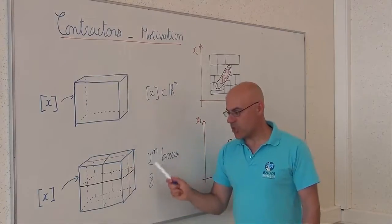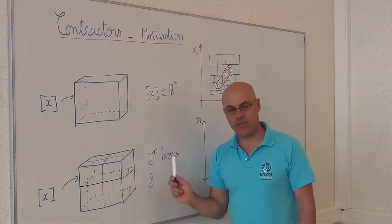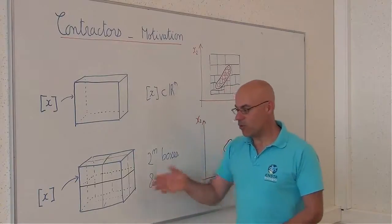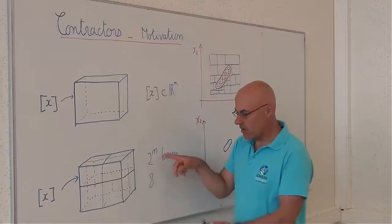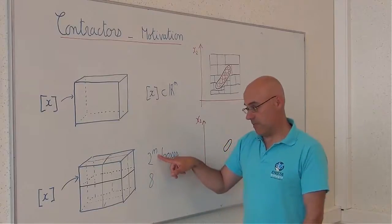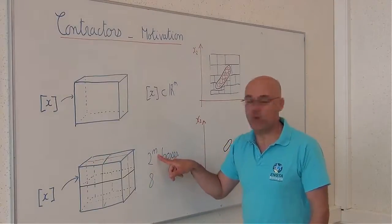Because of the exponential number of sub-boxes that are generated, we will not be able to bisect boxes for n big, such as n equal to 100, for instance.